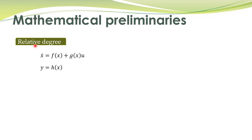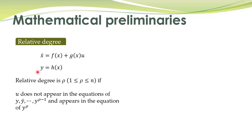The first concept is relative degree. If you have a nonlinear system described by state equations and output equations, then relative degree, denoted by rho, is rho if u does not appear in the equations of y, does not appear in the equation of y-dot, and up to the rho minus first derivative of y, and it appears in the equation of the rho-th derivative of y. Rho is a number between 1 and n, where n is the number of state variables.